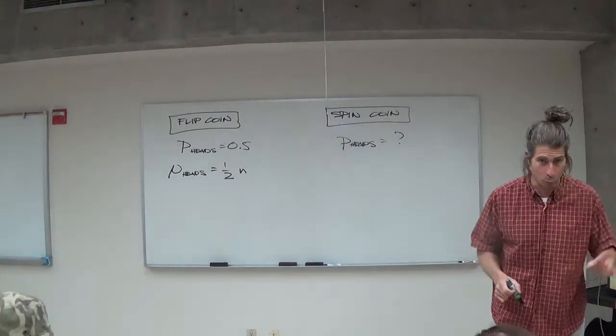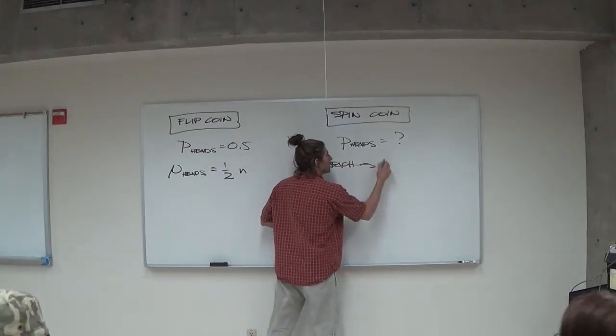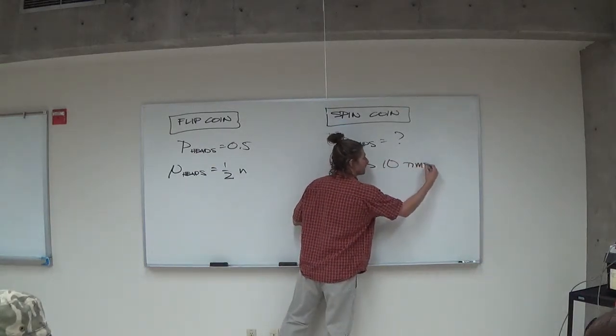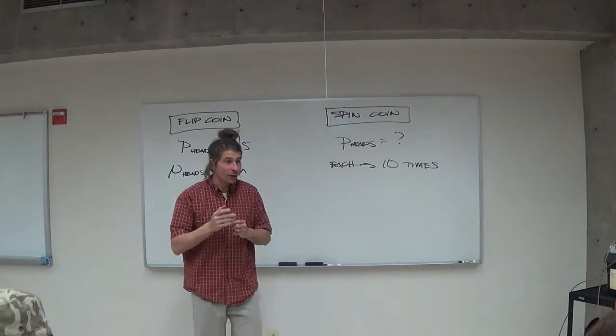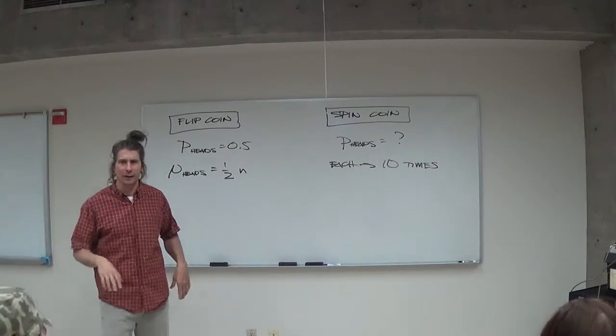We're going to spin the coin, and what I want to know is the chance of heads when the coin is spun and allowed to fall. Let's set up some rules here. For each of you, spin it 10 times. That way we each get 10, so we'll have like 200 or so trials all together.